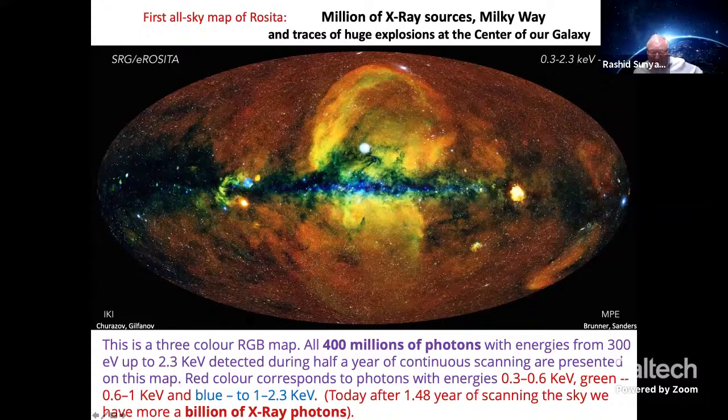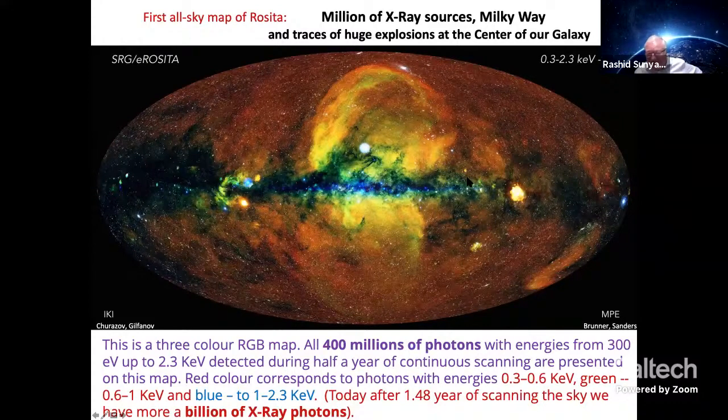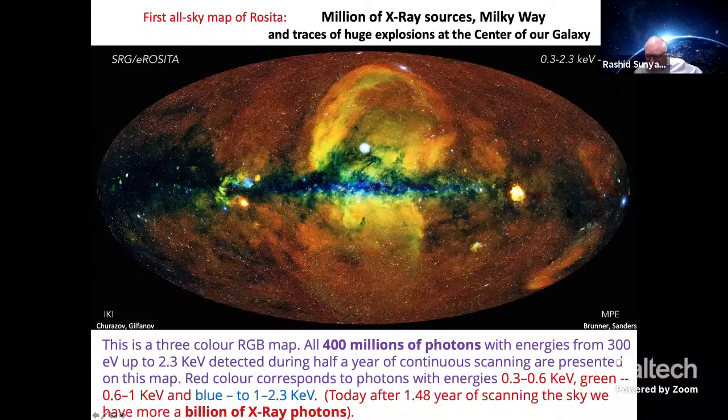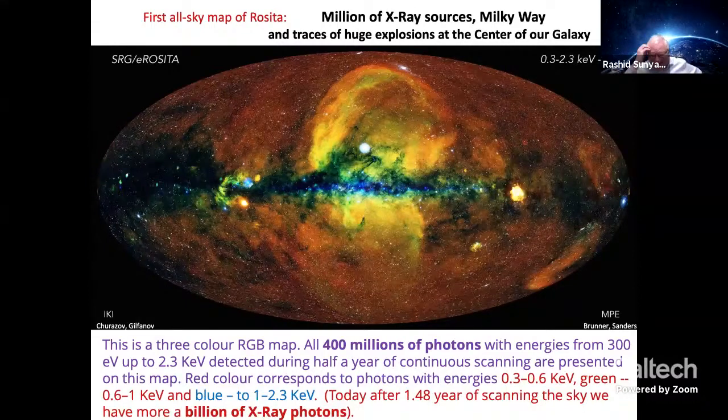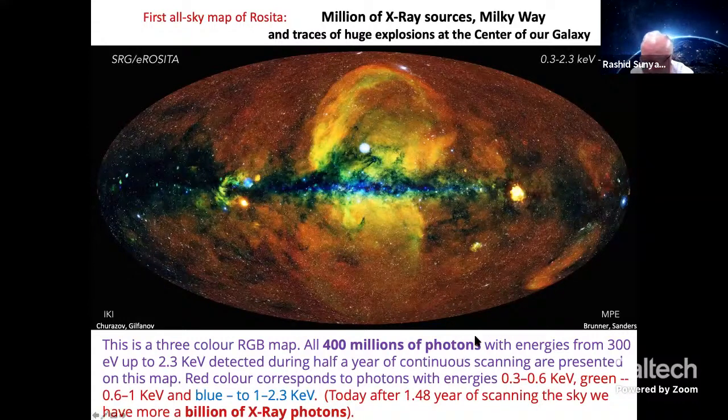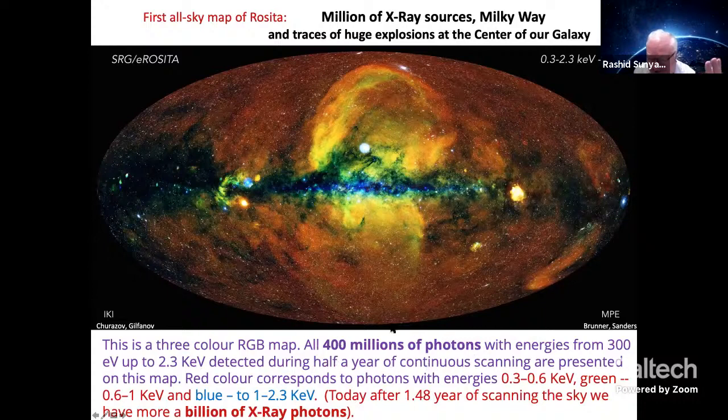Much more important are these small white dots. I hope that you see them. Many, many small white dots. This is a million X-ray sources on the sky. You see also Milky Way and traces of huge explosions in the center of our galaxy. North Polar Spur, and this is the eROSITA bubble on the south. Here on this map, you see three colors in this RGB map again. All 400 million photons which were used to create this we got during half a year, during first scan of the sky. Peter Predehl told me that 400 million photons is more than all X-ray astronomy got during 50 years of its existence. We got it in half a year.